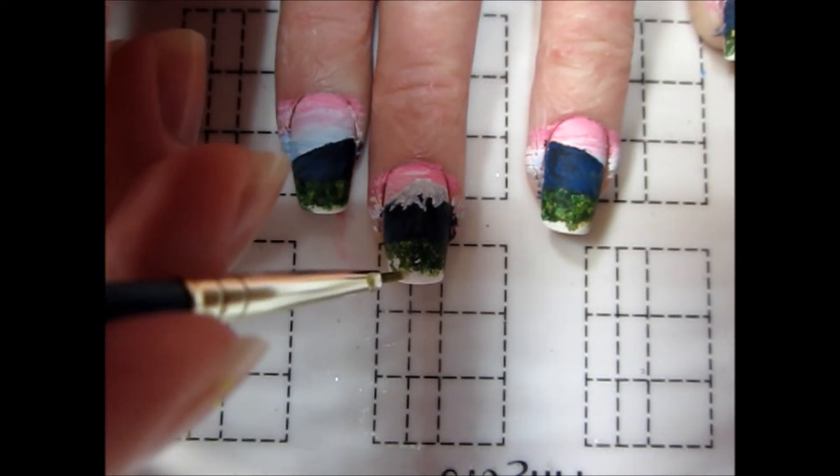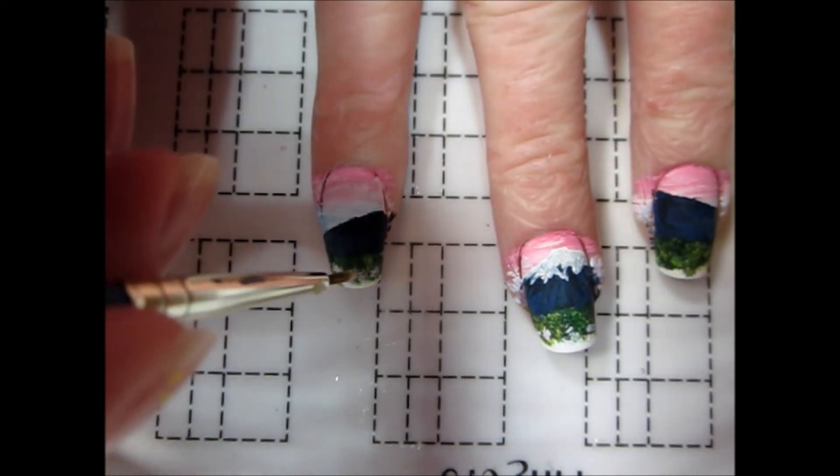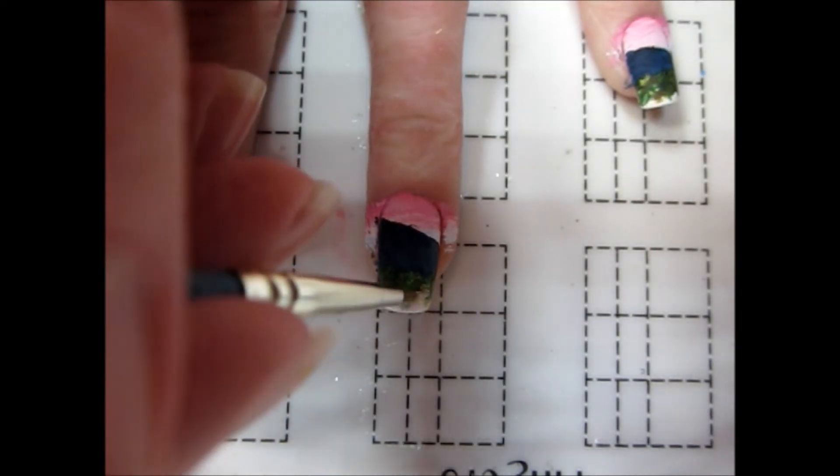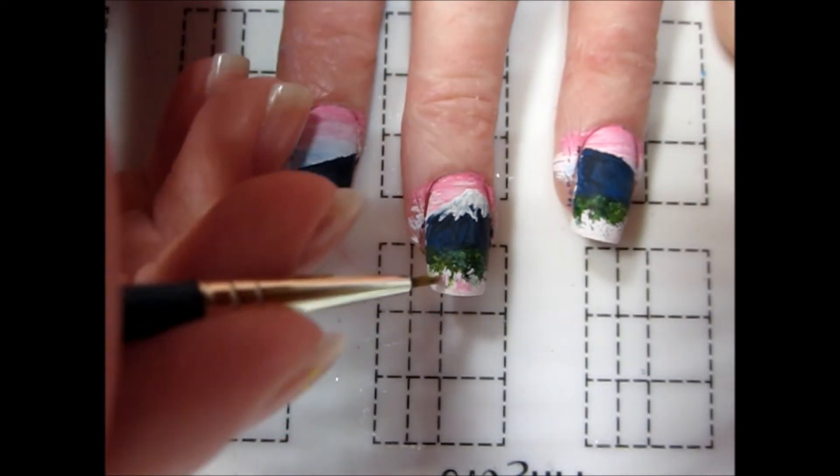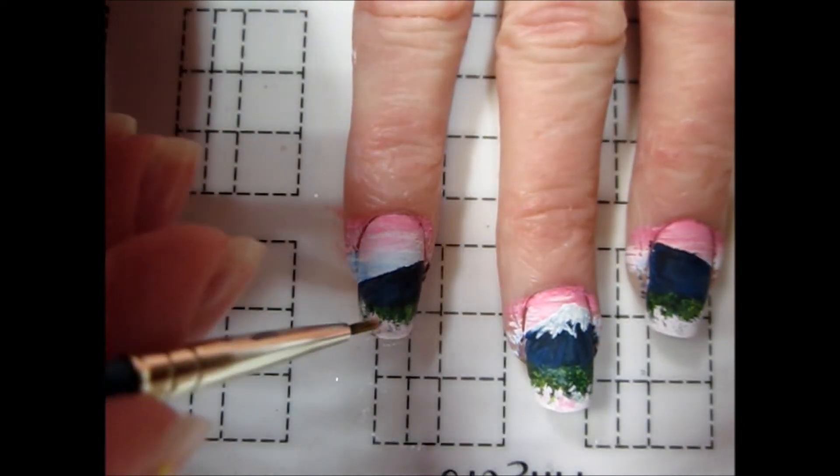I allowed the green to dry before finishing the foreground by adding the tops of trees filled with cherry blossoms. I used the same technique as before to add a light pink and a medium pink in uneven waves at the tips of my nails.